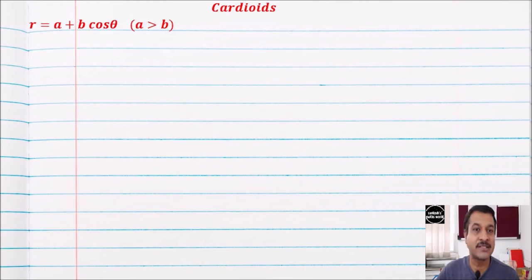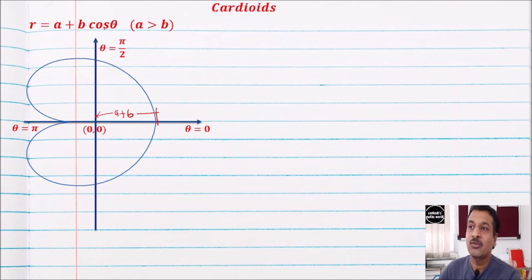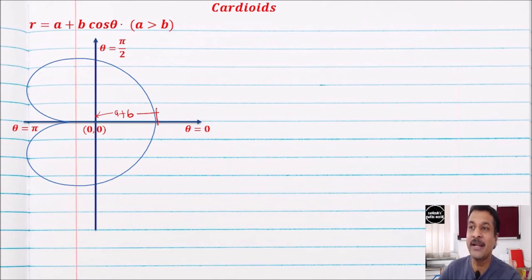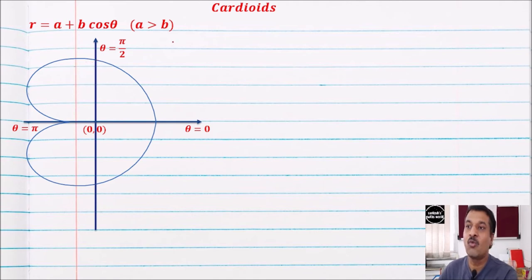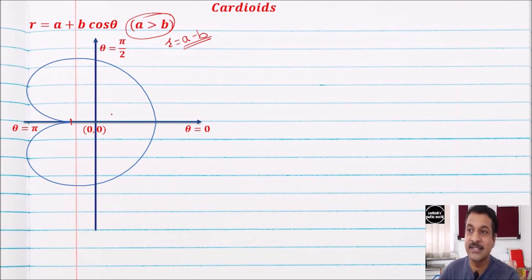There are different cardioids also: r = a + b cos θ where a > b. When θ = 0, r = a + b (since cos 0 = 1). When θ = π/2, cos(π/2) = 0, so this distance is a. When θ = π, cos π = −1, so r = a − b. Since a > b, we get a positive value but not zero — the point is away from the pole. Note that the maximum distance is a + b and the distance at θ = π/2 is a.